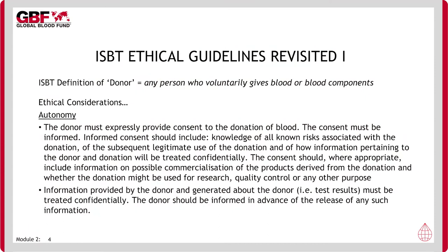We have already looked broadly at the ISBT Code of Ethics. Let's consider this again with specific reference to its guidance in relation to donors. ISBT defines a donor as any person who voluntarily gives blood or blood components, though in the context of resource-poor countries, we probably need to expand this definition to include family replacement donors. ISBT cites two broad ethical principles relating to donors: autonomy and dignity, and non-maleficence, referring to doing no unnecessary or unreasonable harm.